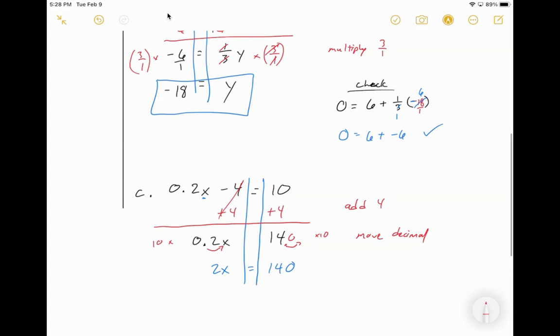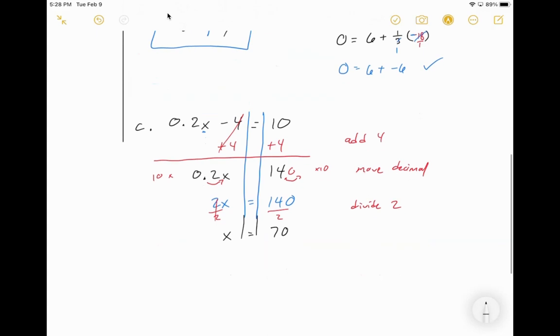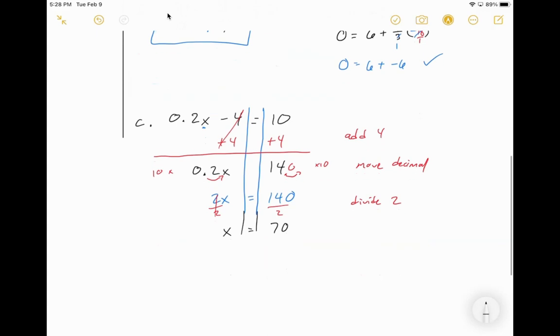And then the last step, nice and easy. We know we need to divide by 2 on both sides. Divide by 2. Divide by 2. That canceled out. We're left with x is equal to 70. Let's do our check. Let's make sure.